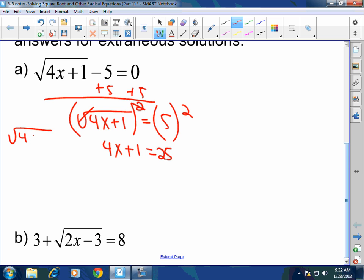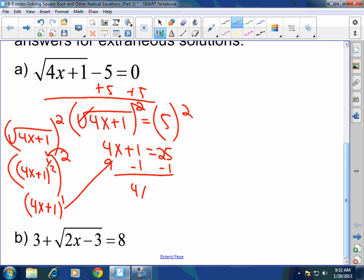Now, why does the square root of 4x plus 1, why is it that when it's squared, it cancels? Well, if you remember from the last section we just did, 6-4, the square root of 4x plus 1 can turn into 4x plus 1 to the 1 half power raised to the second power. 2 times 1 half, that's 2 over 2, that's 1. 4x plus 1 to the first power is just 4x plus 1. So now it's simple. You just solve for x. 4x equals 24 divided by 4 and x equals 6.